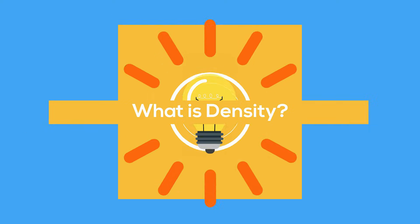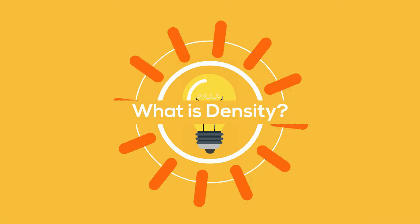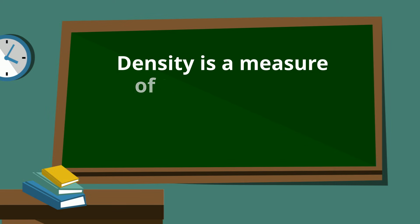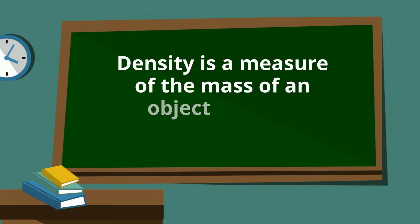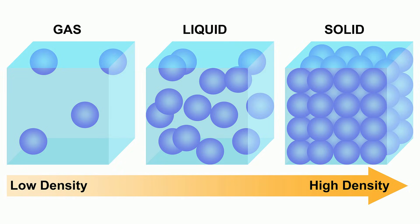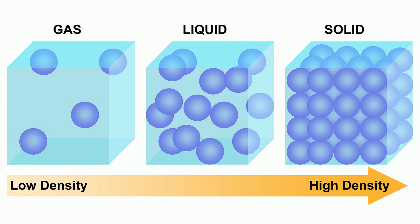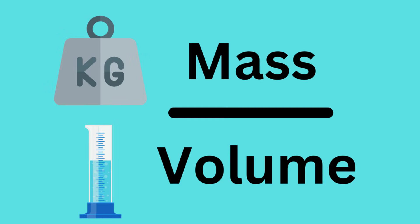So what is density? Density is a measure of the mass of an object per unit volume. In other words, it's a measure of how compact the atoms inside of an object are. Density is just a ratio of mass to volume.